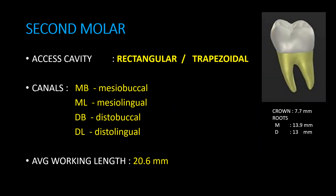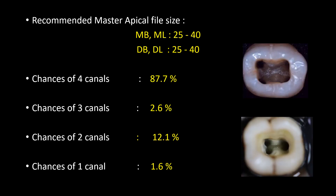Second molar. Access cavity is rectangular or trapezoidal shaped. Canals include MB (mesiobuccal), ML (mesiolingual), DB (distobuccal), and DL (distolingual). Average working length is 20.6 mm. Recommended master apical file size: MB and ML is 25–40; DB and DL is 25–40. Chances of four canals is 87.7%, three canals is 2.6%, two canals is 12.1%, one canal is 1.6%. A pic shows rectangular shaped access cavity of mandibular second molar with three and two canals is shown.